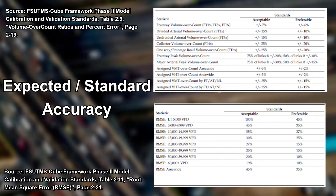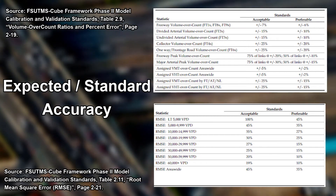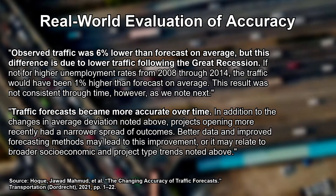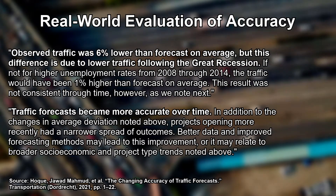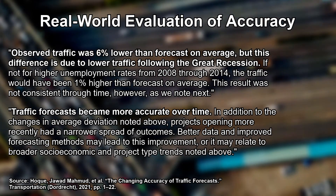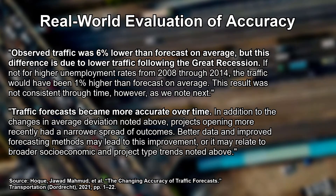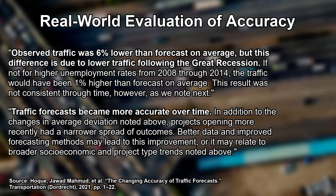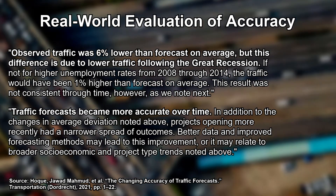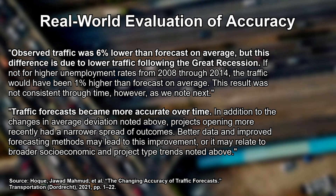In terms of an actual evaluation of travel demand forecasting models, a 2021 study compiled the largest known database of traffic forecasting data and compared measured versus forecast traffic to evaluate accuracy. They found that actual traffic was on average 6% lower than what was forecast. However, this difference was largely due to the Great Recession and its decreased employment rates. It's worth noting that forecasts are on average becoming more accurate as time progresses, as more recent projects have had a narrower spread of outcomes.